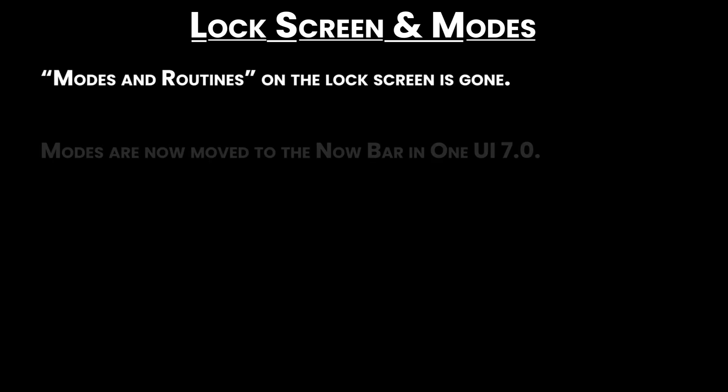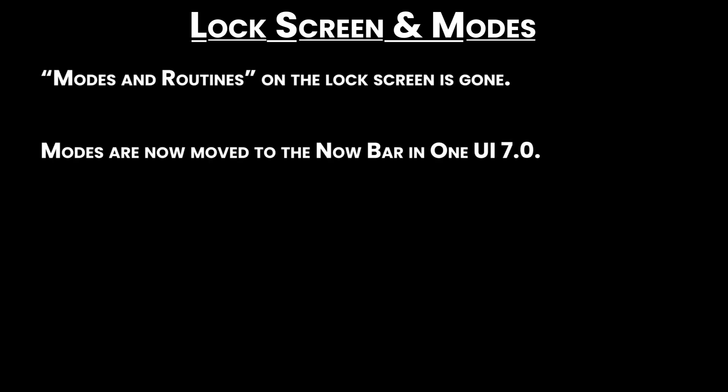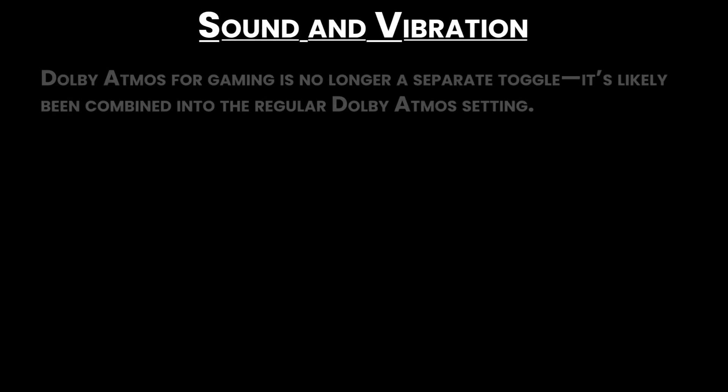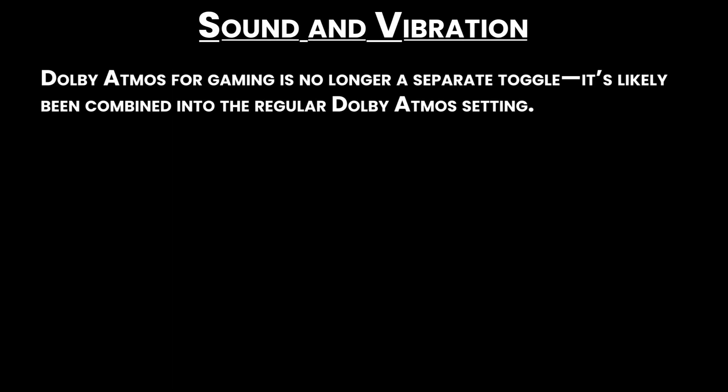Lock screen and modes: Modes and Routines on the lock screen is gone. Modes are now moved to the Now bar in One UI 7.0. Sound and vibration: Dolby Atmos for gaming is no longer a separate toggle — it's likely been combined into the regular Dolby Atmos setting.